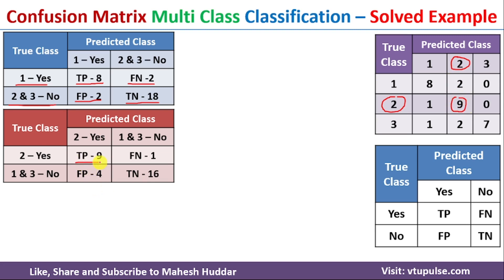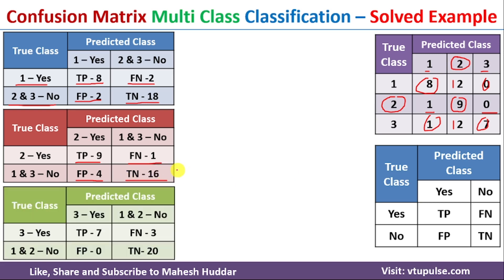The values 1 and 0 are of type class 2 but were classified as classes 1 or 3 — that is false negative. The values 2 and 2 are of types class 1 and class 3 — 'no' examples — but they were predicted as class 2, which is 'yes', so they are false positive. The values 8, 0, 1, and 7 are of type classes 1 and 3 classified as classes 1 and 3 — 'no' predicted as 'no' — that is true negative, equivalent to 16.